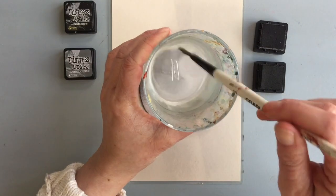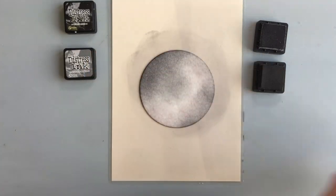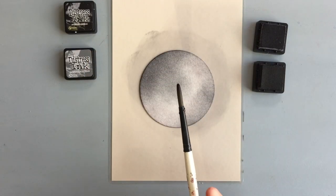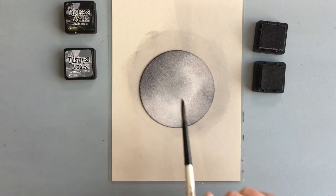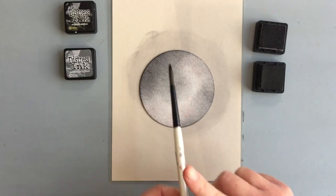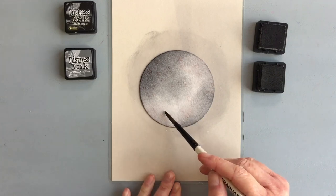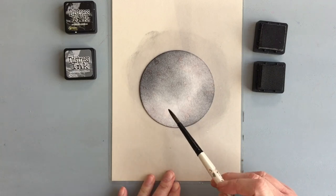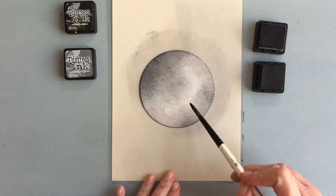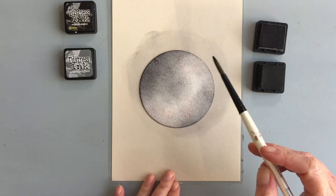Once I was done with the ink application, I used clean water and a brush and sprinkled a few droplets across the circle. At some places I used the brush directly and spread the water a bit, but that's optional. You can just add the droplets.